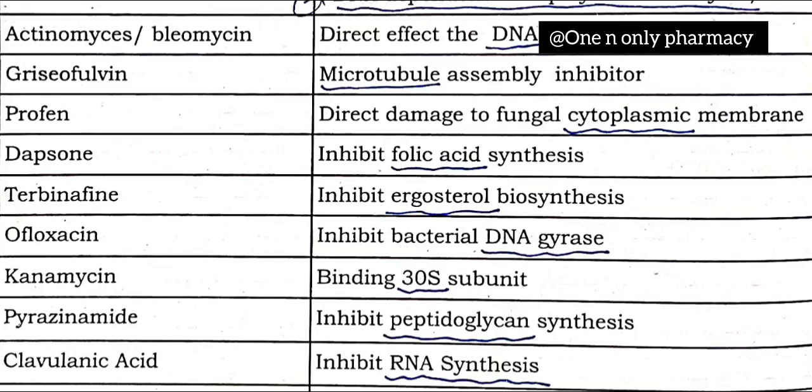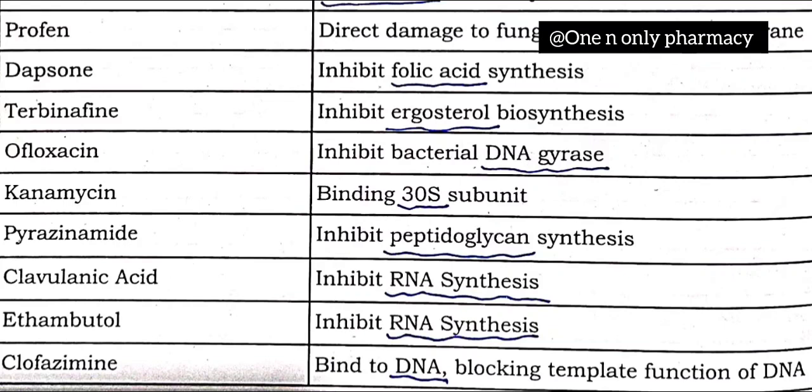Profane causes direct damage to the fungal cytoplasmic membrane. Dapsone inhibits folic acid synthesis. Terbinafine inhibits ergosterol biosynthesis. Ofloxacin inhibits bacterial DNA gyrase. Kanamycin binds to the 30S ribosomal subunit.